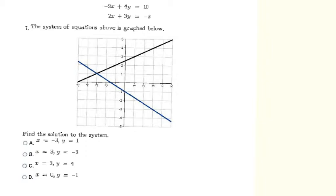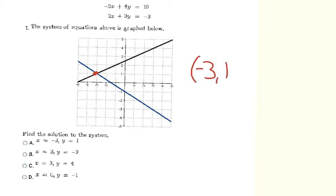In this problem we have two equations that they graphed for us, and they want us to find the solution to this system. When we're graphing, the answer is where those lines cross. These two lines cross at x = -3 and y = 1, so they cross at the point (-3, 1), which means the answer is letter A.